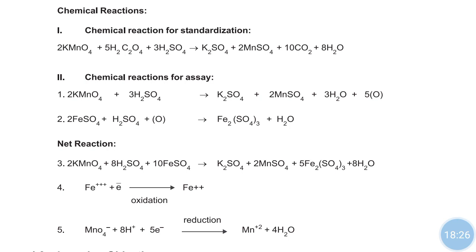To prevent the degradation of KMnO4, it is dissolved in distilled water, then boiled for 15 to 30 minutes, then cooled at room temperature, then filtered, and then it is used for the titration.